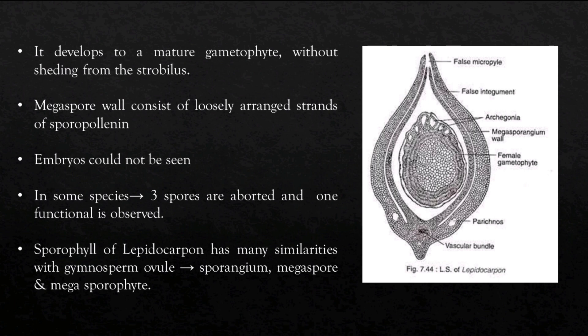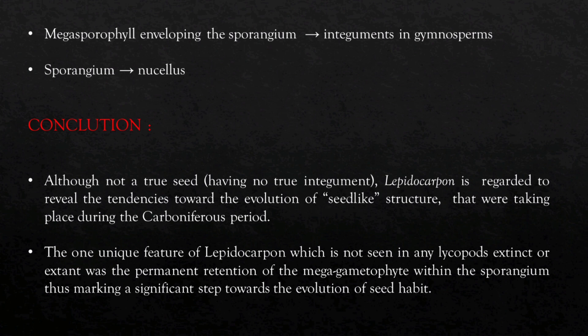The sporophyll of Leptocarpon has many similarities with gymnosperms. For example, the sporangium megaspore and megasporophyte resemble the ovule in gymnosperms. Similarly, the sporangium is enveloped by the megasporophyll, which resembles the integument in gymnosperms.